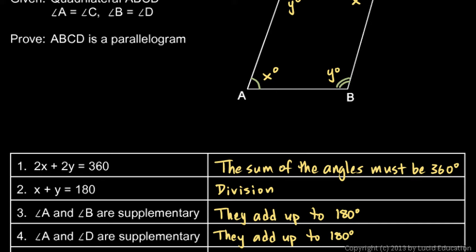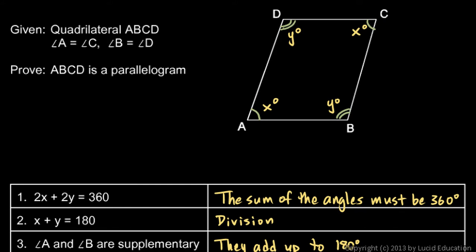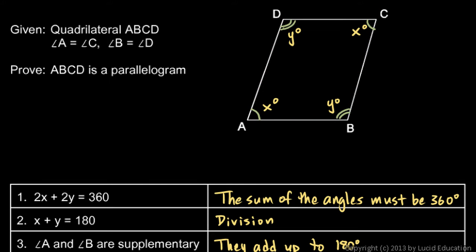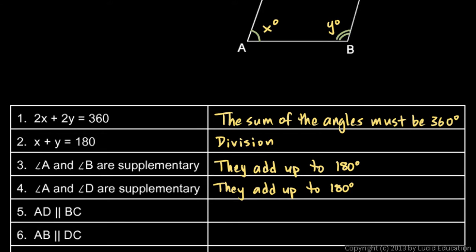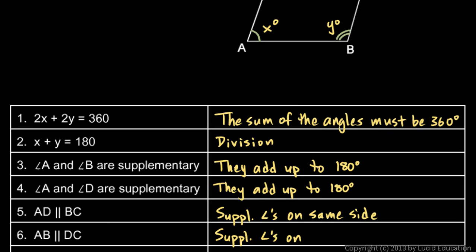The next step: side AD has to be parallel to BC — this has to be parallel to this — because if this is a transversal, we have supplementary angles on the same side, and that means the lines are parallel. AD is parallel to BC because supplementary angles on the same side of the transversal mean the lines are parallel. And the same thing for step 6: AB is parallel to DC for the same reason.